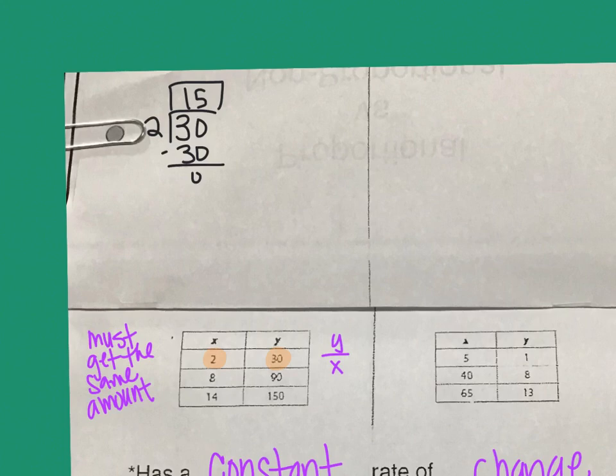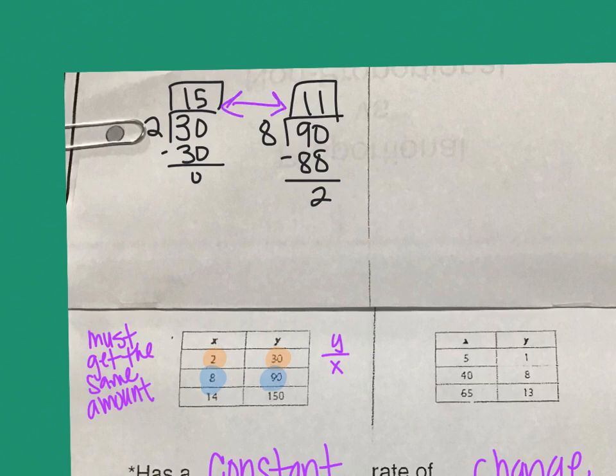The next pairing in the table is 90 and 8. So I need to divide these two numbers and see what I get. 90 divided by 8, up at the top. Well, I know 8 times 11 is 88, and then I have a 2 remainder. Already, I can tell that these two are not the same. So that tells me that this table right here is not proportional.